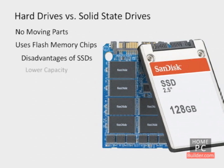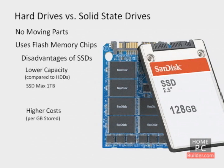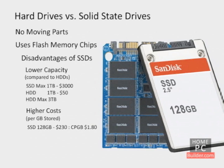Disadvantages of SSDs include low capacities compared to hard drives and a much higher cost per gigabyte of storage. As of summer 2011, SSD capacities max out at 1TB while hard drives go up to 3TB. The cost differences are dramatic: a 1TB SSD is around $3,000 while a 1TB hard drive is around $50. For a 128GB SSD, the cost is around $230, making the cost per gigabyte $1.80, compared to just 4 cents per gigabyte on a hard drive.